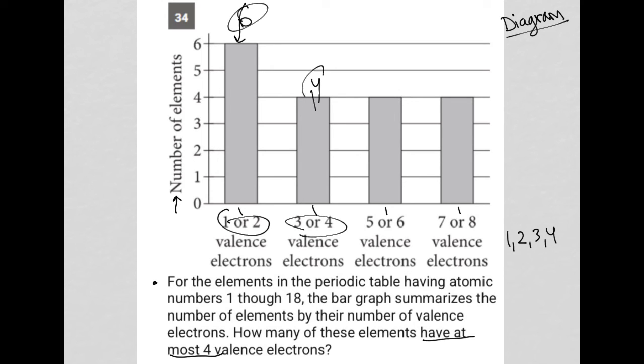So altogether that's six plus four, which is 10. So our answer here must be 10 because that's the total number of elements that can have at most four valence electrons.